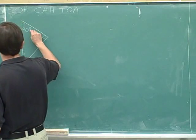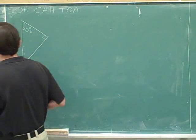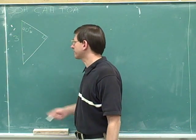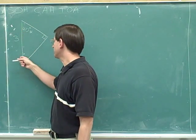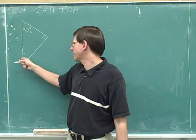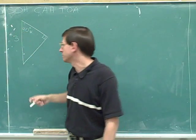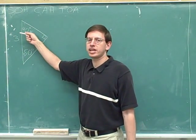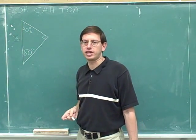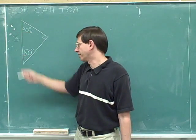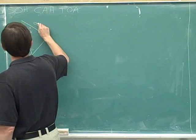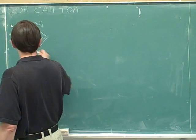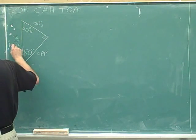Let's use asterisks to keep track of the information that we were originally given. Let's figure out this angle down here. We know this angle plus this angle has to be 90 degrees, so this angle must be 90 minus 40, which is 50 degrees. I'm going to leave the asterisk on the original angle, because the convention is that we keep focusing on the angle we were originally given. So I'm going to label this side as adjacent, because it's adjacent to the asterisk, and this side as opposite, because it's opposite to the asterisk. And clearly the 3 is the hypotenuse.